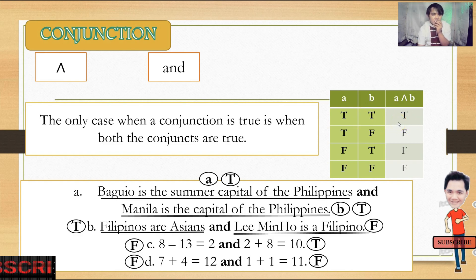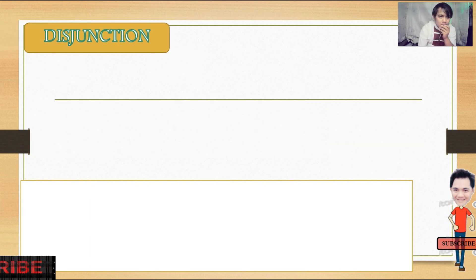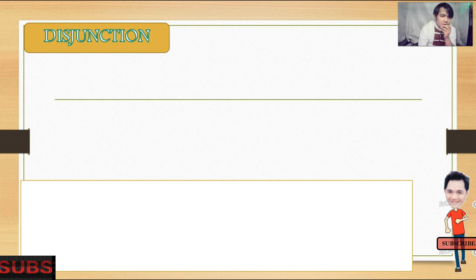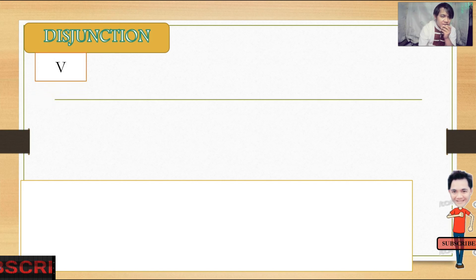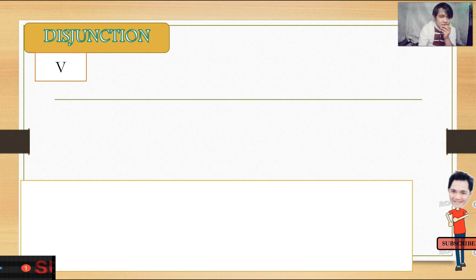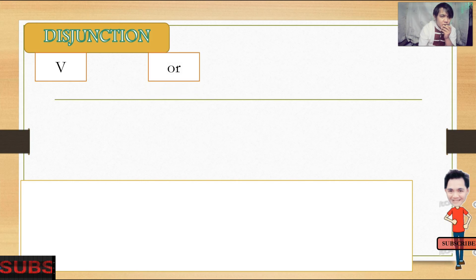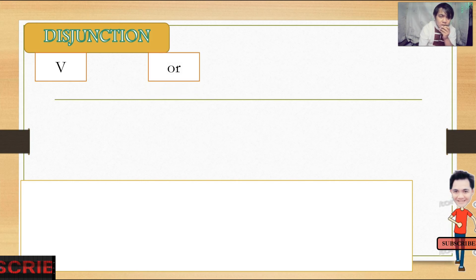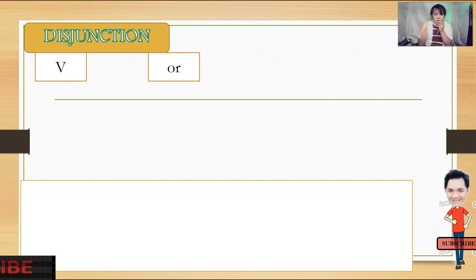That covers conjunction. Now we have the disjunction. For disjunction, our symbol is V. For conjunction it was the inverted V; for disjunction it's V. The word we are going to use is 'or.' There are more words, but we will focus on 'or.'